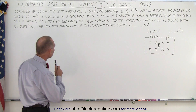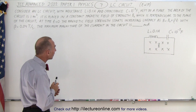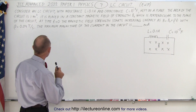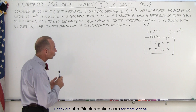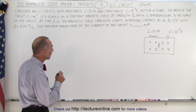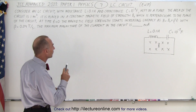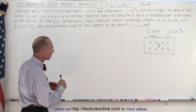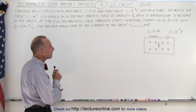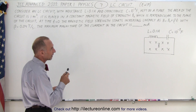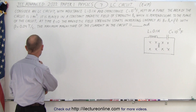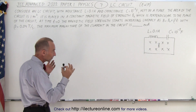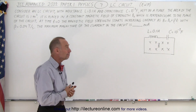Consider an LC circuit with inductance L equals 0.1 Henry and capacitance 10 to the minus 3 Farads, kept on a plane. The area of the circuit is 1 square meter. It is placed in a constant magnetic field of strength B-naught, perpendicular to the plane of the circuit. At time t equals 0, the magnetic field starts increasing linearly as B equals B-naught plus beta·t, with beta being 0.04 tesla per second. The maximum magnitude of the current in the circuit is what we need to find, and the answer should be given in milliamps.